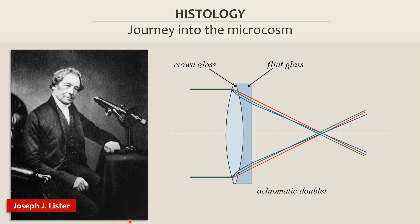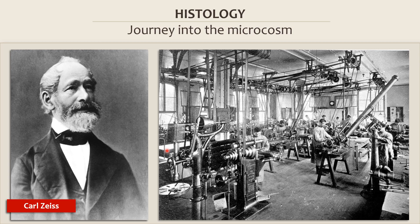Surprisingly, this problem was solved not by a scientist, but by an ordinary British winemaker, Joseph Jackson Lister — the father of the future famous surgeon about whom we will talk in the next parts of the lecture. In 1826, in his spare time, Lister developed a microscope with achromatic lenses and greatly improved image quality. This microscope opened new horizons for histology, and very soon scientists began to make discovery after discovery in this field. The next important step in the introduction of the microscope into science was the beginning of mass production of microscopes by Carl Zeiss in Germany. He produced high-quality microscopes cheaply, making them accessible for students and young doctors.